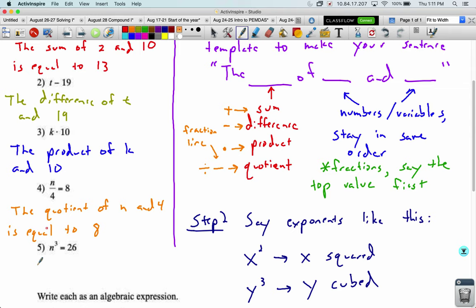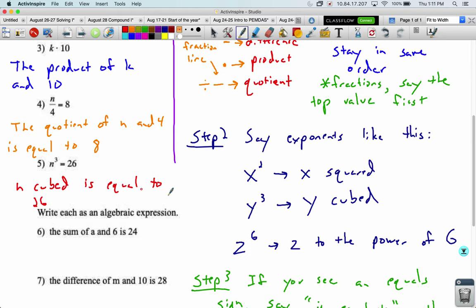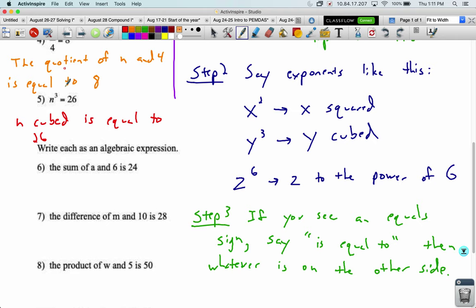And then number five. I see a to the power of three. I'll use this key here. So n cubed is equal to 26. Alright. And then the abbreviation for is equal to is to just say is. And then it's implied that the equal to is there. But when you're writing out, I want you to write out the full is equal to.